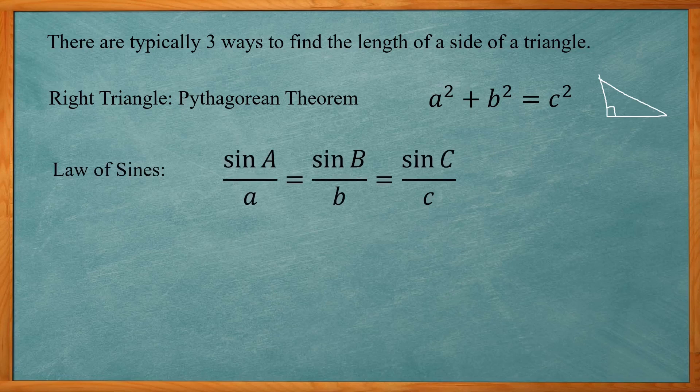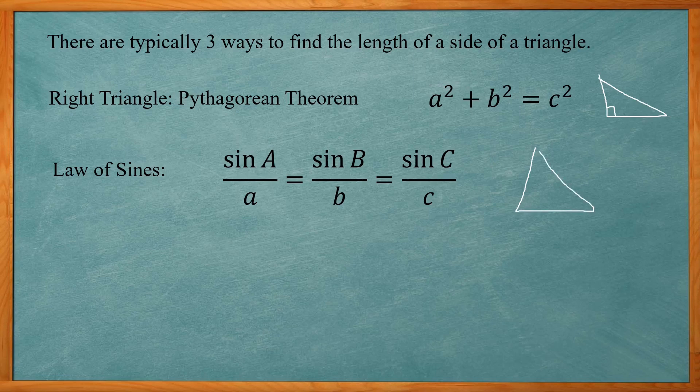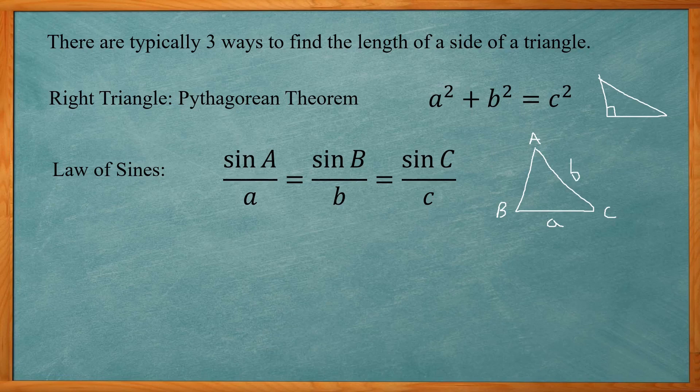If you don't have a right triangle, you can use the law of sines, where you have sine of angle A over side a, sine of angle B over side b, which is equal to sine of angle C over side c. So you have a triangle with angles A, B, and C. The angle opposite of them will be their corresponding side. So side a would be opposite of angle A, side b would be opposite angle B, side c would be opposite angle C.